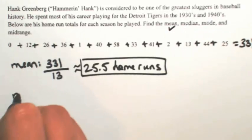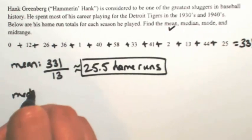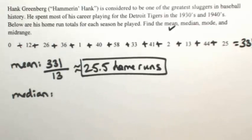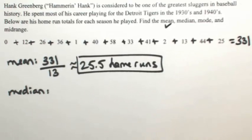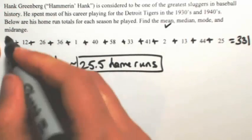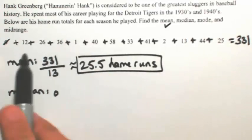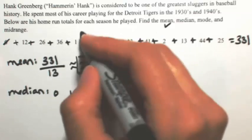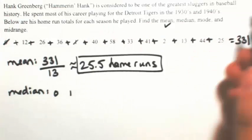The next thing I want to find is the median. The median is simply the middle number of the data. But you have to be really careful because it's the middle number of the ordered data. So we need to write them in order — that's critical. Starting with 0, then 1, 2.